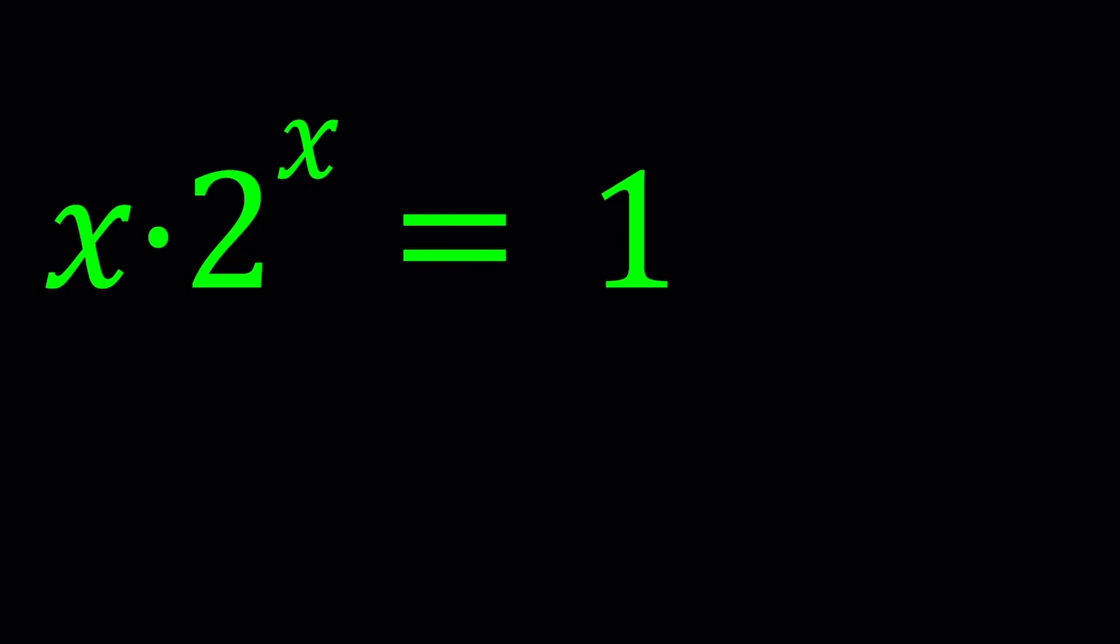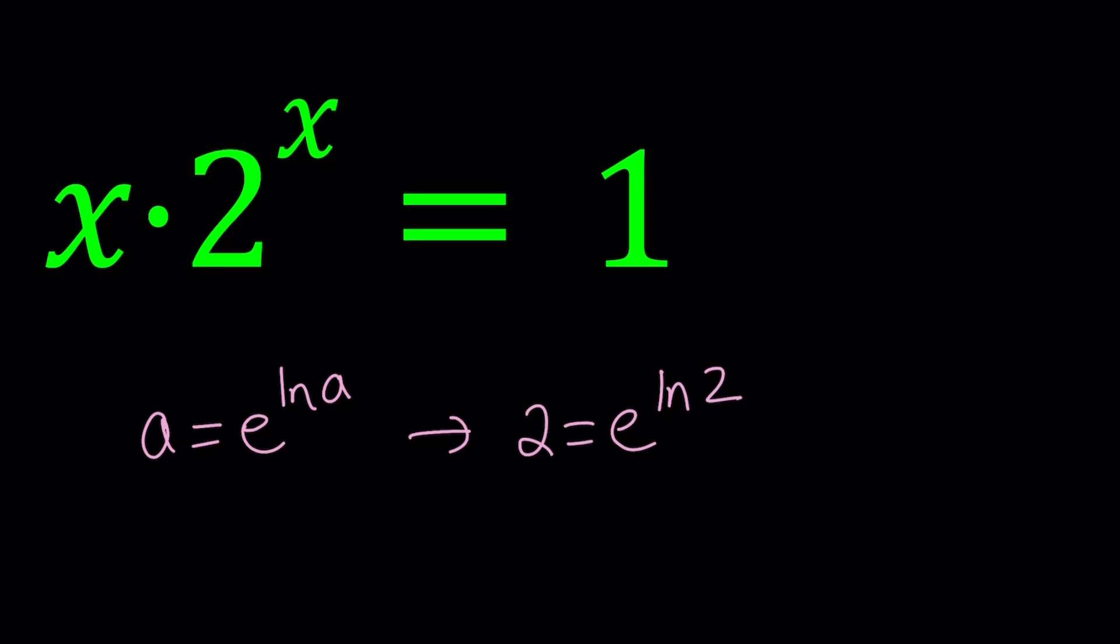First of all, it would be nice if we had e as our base, the natural log ln thing, but we have a 2, but that can easily be fixed. Consider the fact that a can be written as e to the power ln a. We can basically write the 2 as e to the power ln 2, by definition of the exponential function.